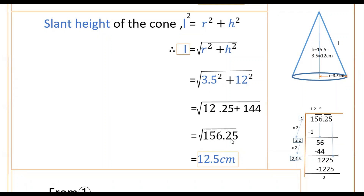We can find the square root of any decimal number using the long division method. First, write the number and put bars over every two digits — both before and after the decimal point — like this.